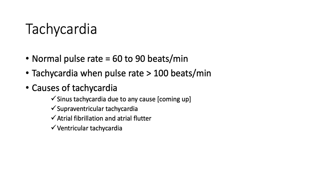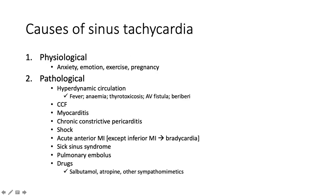Normal pulse rate is 60 to 90 beats per minute. Anything above 100 beats per minute is tachycardia by definition. Different flavors of tachycardia: sinus tachycardia is probably the most common. It could also be supraventricular tachycardia, atrial fibrillation, atrial flutter, or ventricular tachycardia. Sinus tachycardia means heart rate above 100 with a P wave followed by a QRS on ECG, confirming the rhythm originates from the sinus node. Physiological causes: anxiety, emotion, exercise, pregnancy. Pathological causes include any hyperdynamic circulation — fever, anemia, thyrotoxicosis, AV fistula, beriberi, and more.